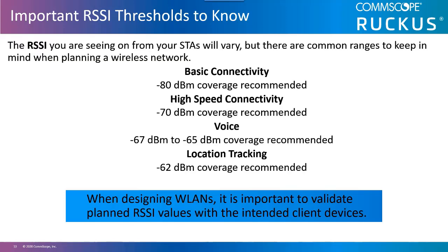Some of the most common RSSI values used in deployments are negative 80 dBm for basic connectivity, negative 70 dBm for high-speed connectivity, negative 67 to negative 65 dBm for voice depending on the particular phones you're using, and negative 62 dBm for location tracking. Always verify the requirements with the device manufacturer and plan your least capable devices as being in that area for coverage.